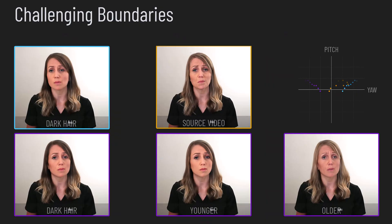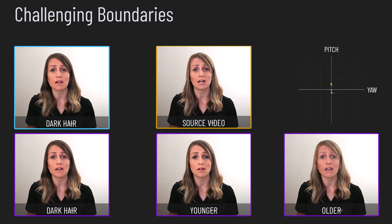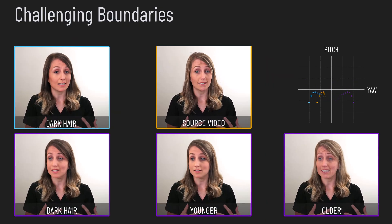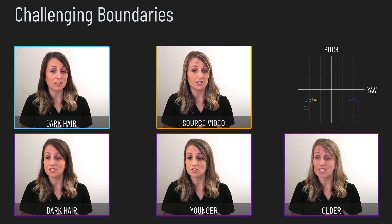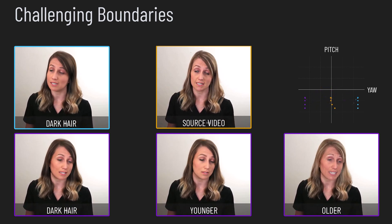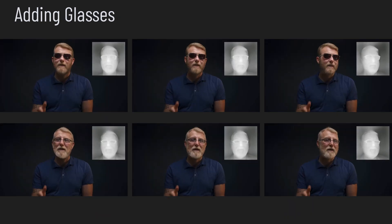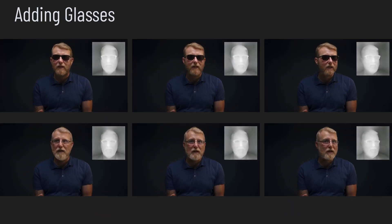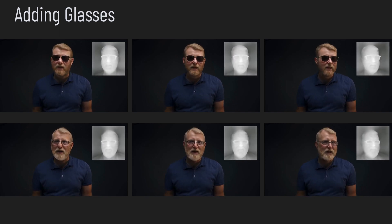We can also remove glasses. When the boundary is challenging, such as matching two hair colors, our method still creates a plausible transition. Here we add eyeglasses. Note how the glasses cast a natural-looking shadow. The glasses also show up in the depth image.